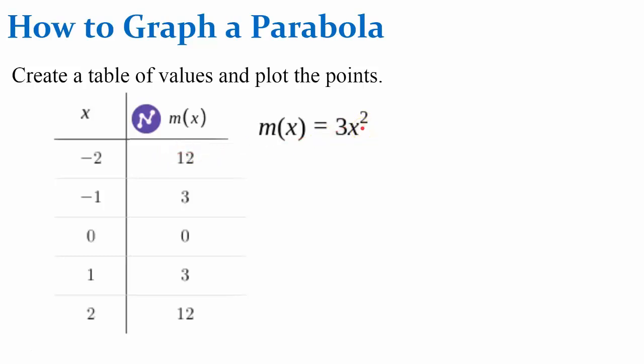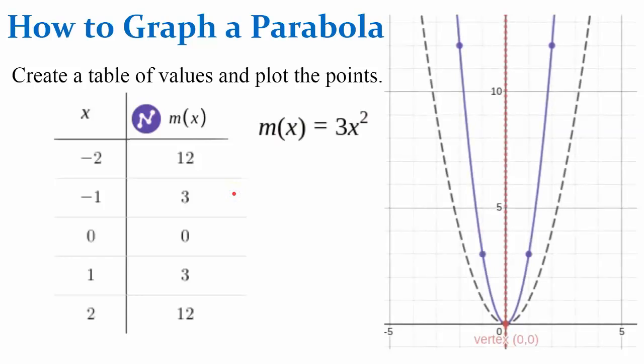Negative 2 squared is 4. 4 times 3 is 12. Negative 1 squared is 1, times 3 is 3. Continue for all your inputs, and then plot your points.